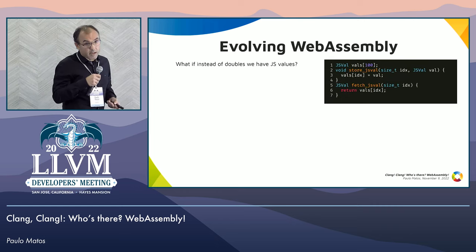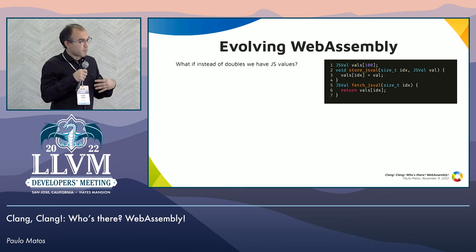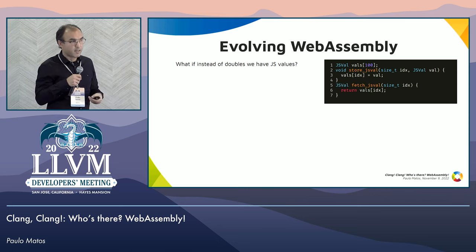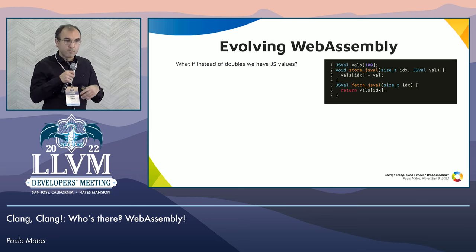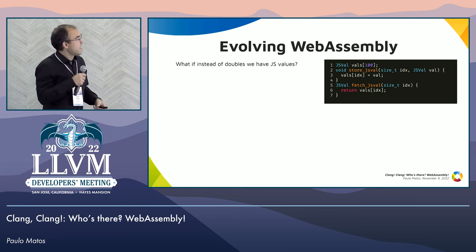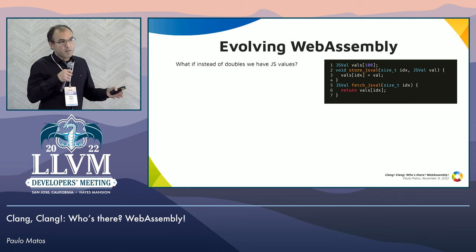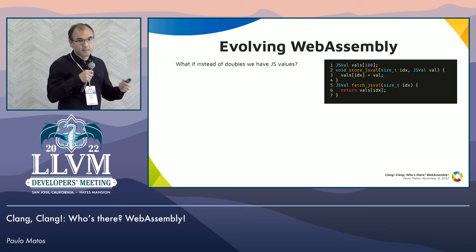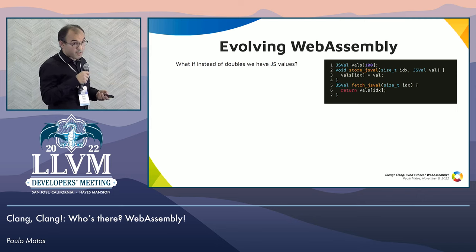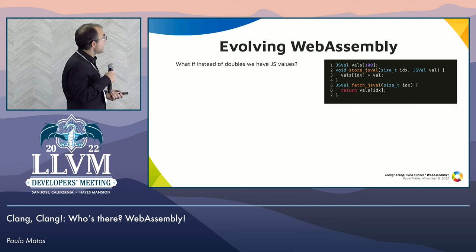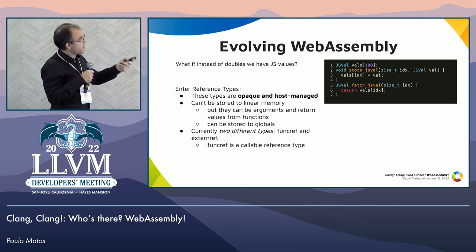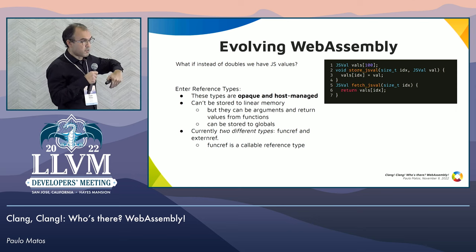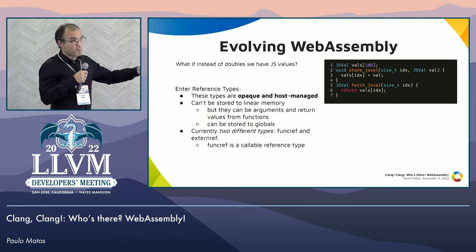WebAssembly is an evolving language. The specification keeps evolving with new features. Proposals and discussions on proposals are all online, and discussions about which proposals should be accepted into the main specification are done online. For the last couple of years we've had many accepted proposals, and many are still being discussed. One of those we're interested in is reference types — what if the double in our array is a JavaScript value, a value sent from the host system that we have to deal with?